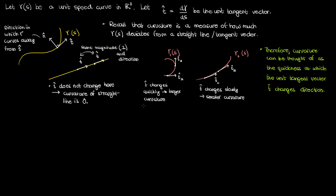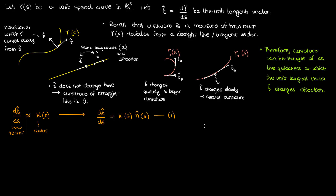How do you measure the quickness at which t changes? You take the derivative. The derivative of t with respect to the parameter s can be said to be directly proportional to the curvature kappa, which is generally a function of the position along the curve s. The problem is that kappa is a scalar while dt by ds is a vector, so we need to multiply the curvature by the vector which points in the direction that the curve curves — the normal vector. So dt by ds equals kappa of s times n̂ of s, and I'll call this equation 1.